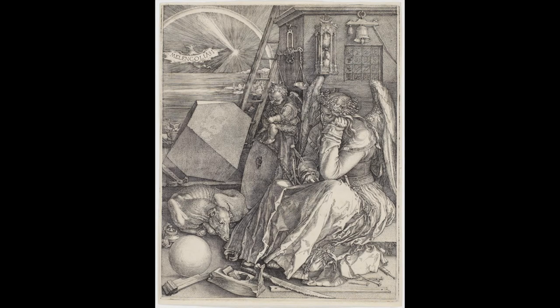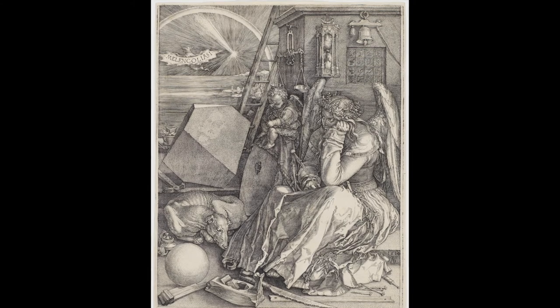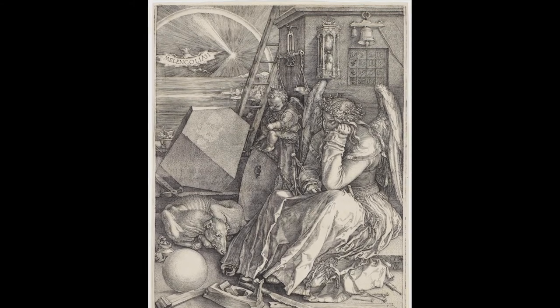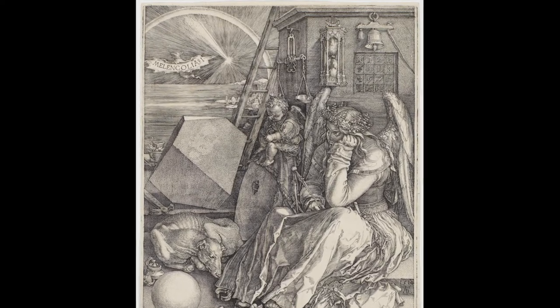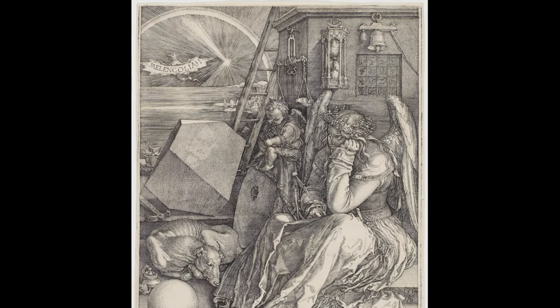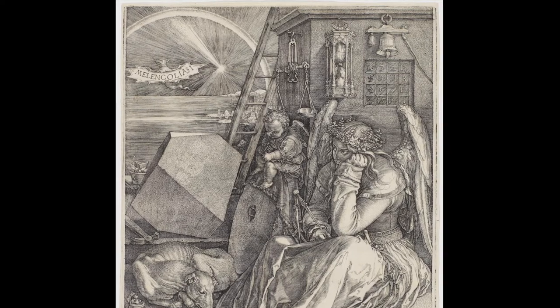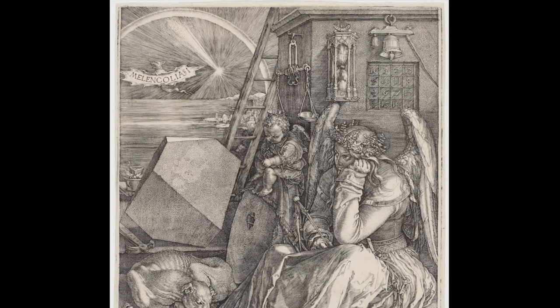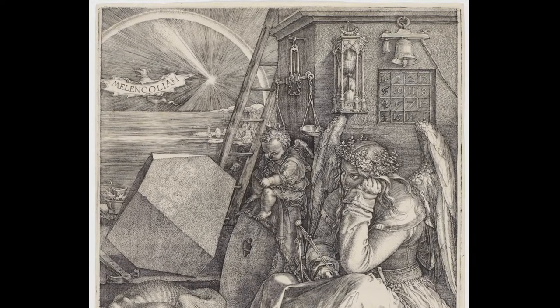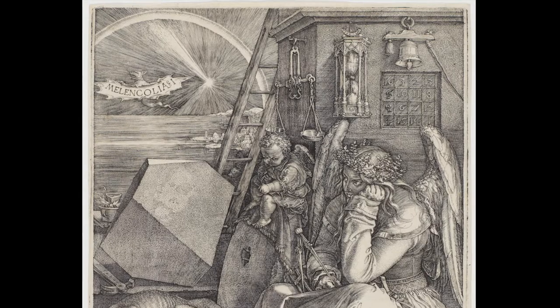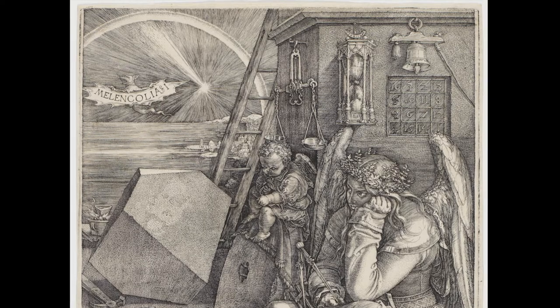Allegedly referring to the diagnosis of all artists as Melancholia Imaginativa by Heinrich Cornelius Agrippa from Agrippa's 1526 Declamation Attacking the Uncertainty and Vanity of the Sciences and the Arts, the 1514 engraving by German renaissance master Albrecht Dürer titled Melancholia I is considered an enigmatic masterpiece to this day.